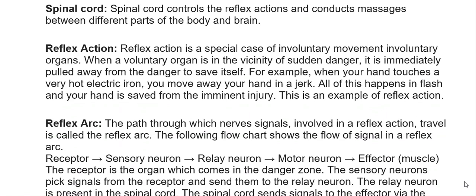The spinal cord controls reflex actions and conducts messages between different parts of the body and the brain. Reflex action is a special case of involuntary movement in voluntary organs — when a voluntary organ is in the vicinity of sudden danger, it is immediately pulled away to save itself. For example, when your hand touches a very hot electric iron, you move your hand away in a jerk, saving it from imminent injury.